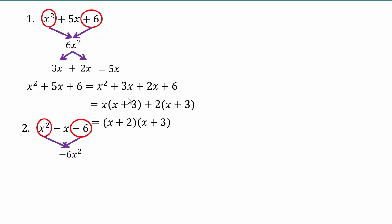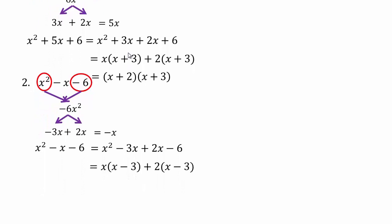For the second example, 6x squared — it will be negative because you have negative 6. So two numbers multiply to give negative 6 and add to give negative 1x. Negative 3 and positive 2 will take care of that. Let's rewrite it, then factor by grouping on the first two terms and last two terms. Rewrite it so that you have pulled out x minus 3, and you have x plus 2 left.